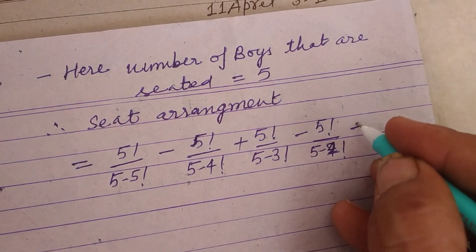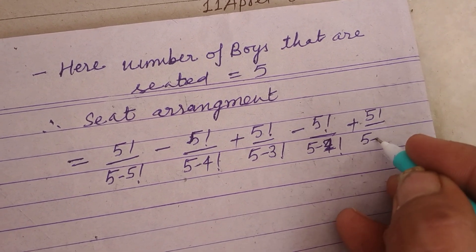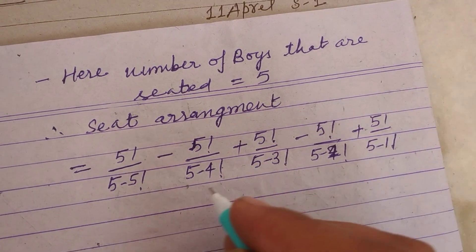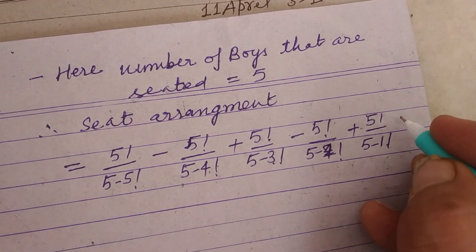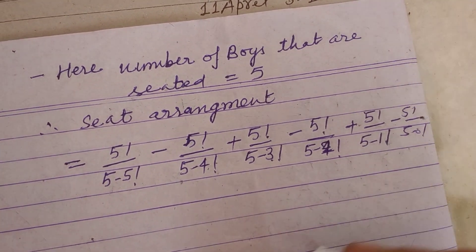Continuing: 5! / (5-2)! plus 5! / (5-1)!. This is 5, 4, 3, 2, 1, and lastly 5! / (5-0)!.